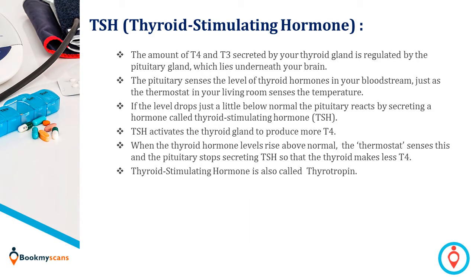Thyroid stimulating hormone: The amount of T4 and T3 secreted by your thyroid gland is regulated by the pituitary gland, which lies underneath your brain. The pituitary senses the level of thyroid hormones in your bloodstream, just as the thermostat in the living room senses the temperature. If the level drops just a little below normal, the pituitary reacts by secreting a hormone called thyroid stimulating hormone (TSH), which activates the thyroid gland to produce more T4.